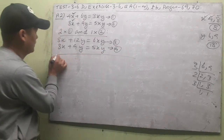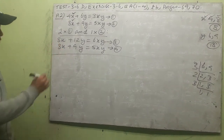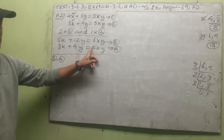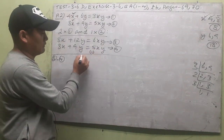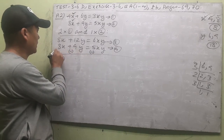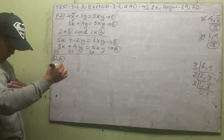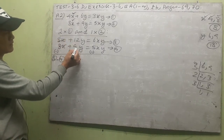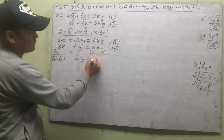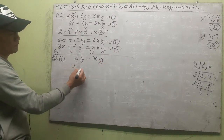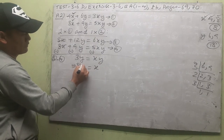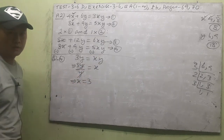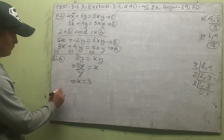The equated x-coefficients (8 and 8) have the same sign, so we do equation 3 minus equation 4. Every term in equation 4 changes sign: 8x − 8x = 0, 12y − 9y = 3y, 6xy − 5xy = xy. So 3y = xy, giving x = 3.